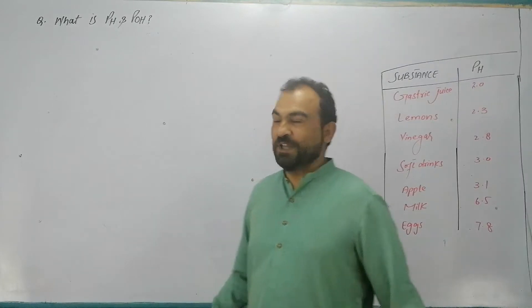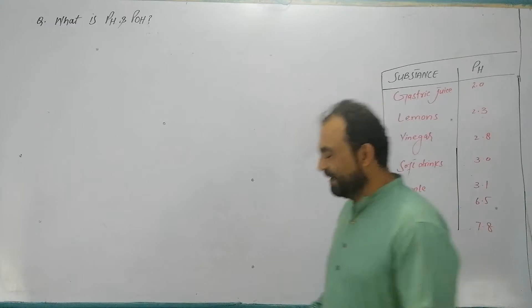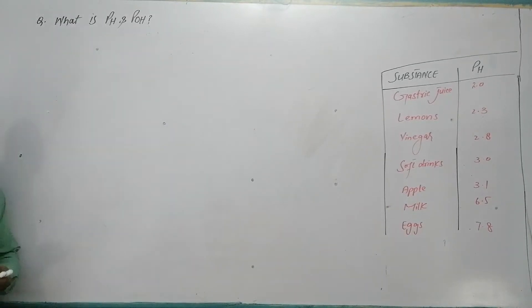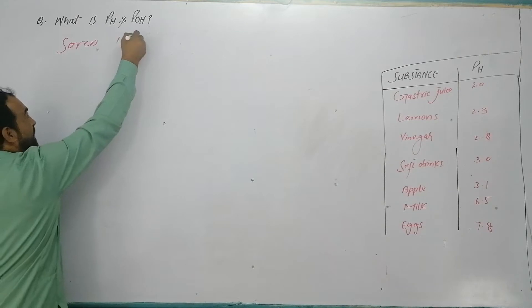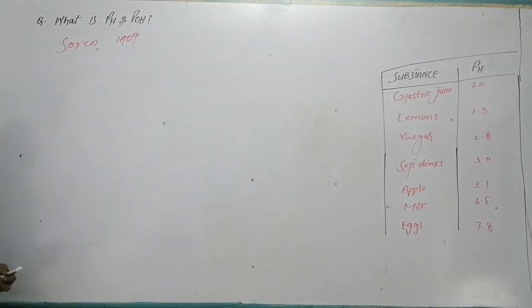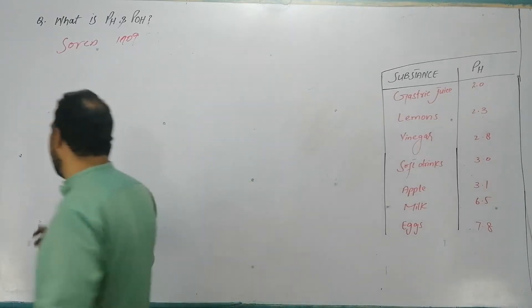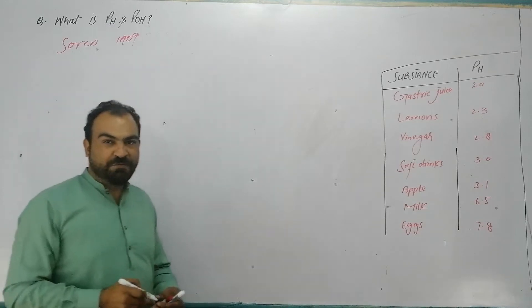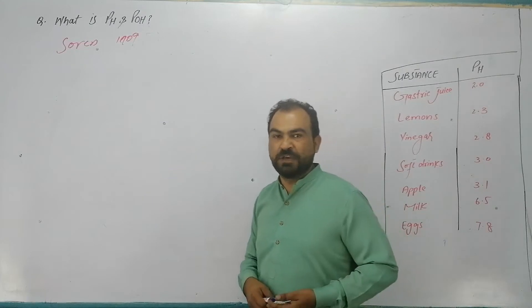Assalamualaikum students, it's me Tahir. Our topic is pH and pOH. The pH scale was given by Sorensen Adonis in 1909. According to this, the scale was given to convert small exponential values like the concentration of H positive ions and OH negative ions into whole number values.